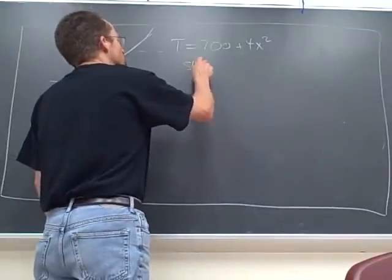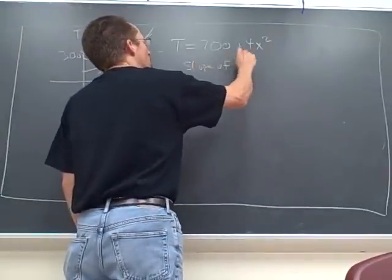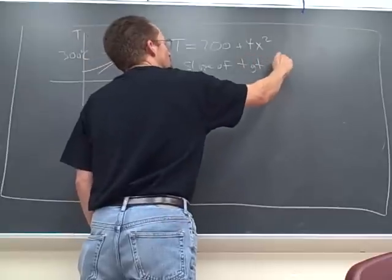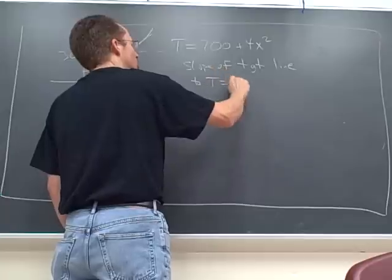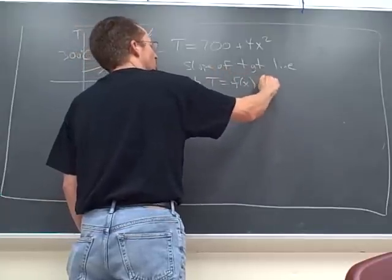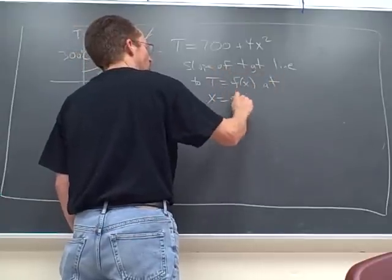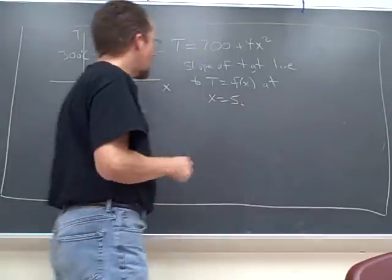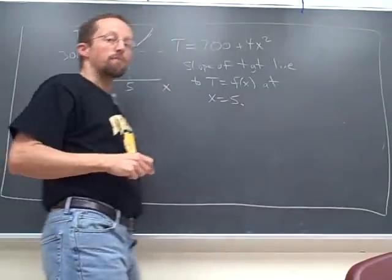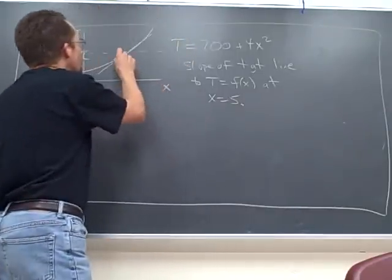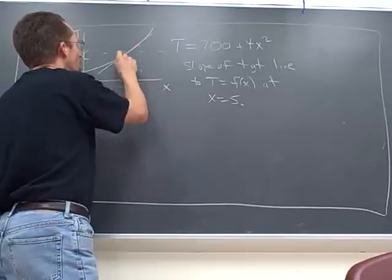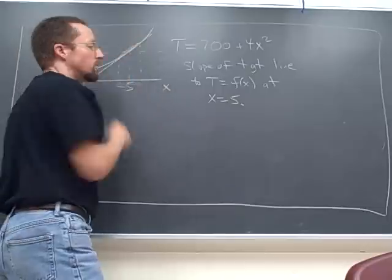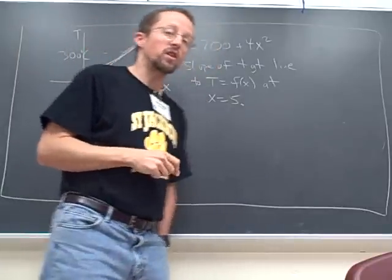I want the slope of the tangent line to T equals f of x at x equals 5. You guys got that looking at some data. One way was to bracket the data and take a secant line, and that's usually just going to be an approximation.